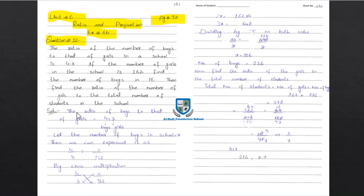The ratio given is boys to girls: 4 to 3. We need to find the number of boys. Let the number of boys in school be equal to x. This can be expressed as 4 is to 3 equals x is to 162.